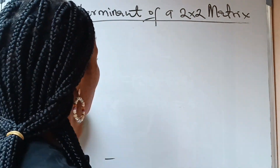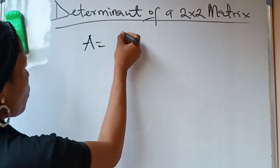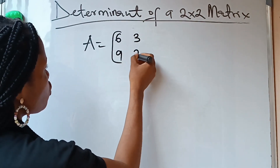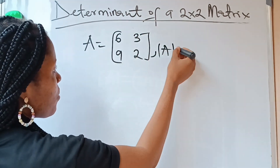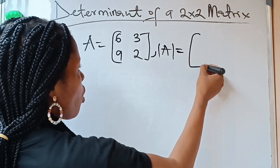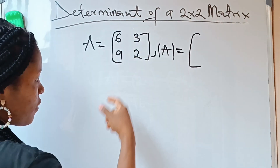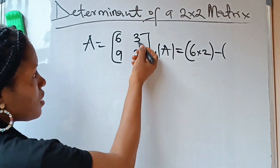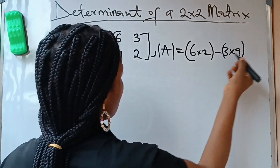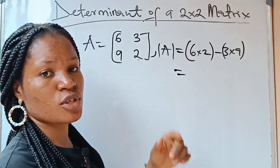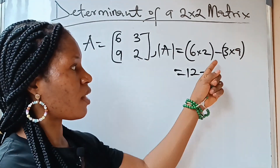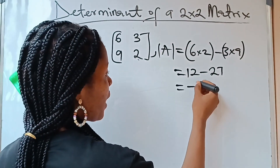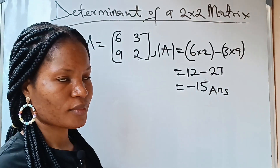Let's give another example of a 2 by 2 matrix. If we have A equal to [6, 3; 9, 2], and we are asked to find the determinant of A. You multiply your leading diagonal first: 6 times 2, minus the other diagonal: 3 times 9. So this is equal to 6 times 2 which gives you 12, minus 3 times 9 which gives you 27. 12 minus 27 is going to be minus 15. And this becomes your answer.